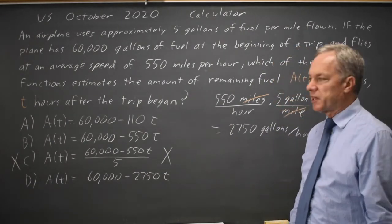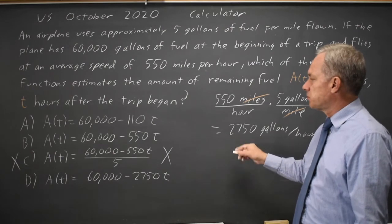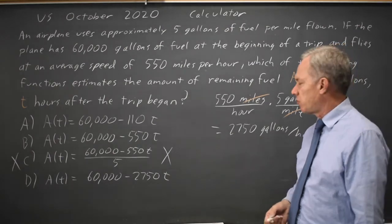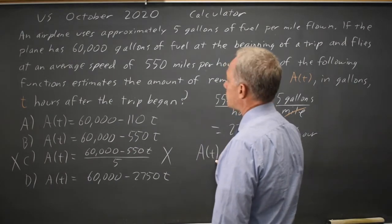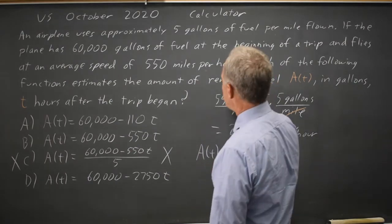If you multiply the number of gallons per hour by the number of hours, which is T, that's the total fuel used. So A of T, the amount of fuel remaining,